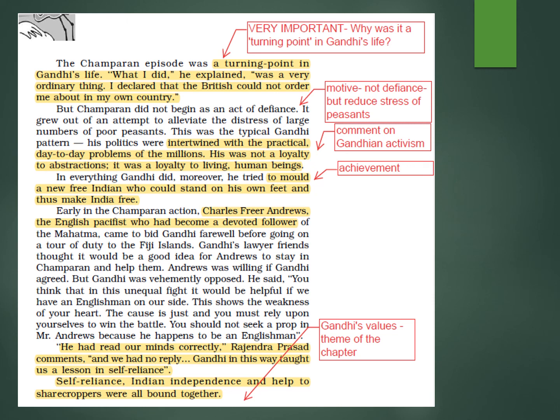Gandhi's politics were intertwined with the practical day-to-day problems of millions — not based on other motives, but on the benefit of the common people. Moreover, he tried to mold a new, free Indian who could stand on his own feet and thus make India free. Early in the Champaran action, Charles Freer Andrews, the English pacifist who had become a devoted follower of the Mahatma, came to bid Gandhi farewell before going on a tour of duty to the Fiji Islands.